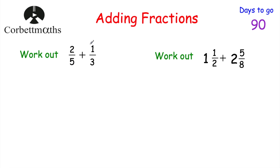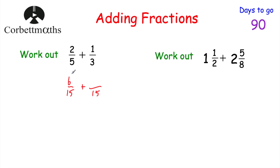So we've got: work out two fifths plus one third. When we're adding fractions with different denominators, it's very important to get equivalent fractions with the same denominator. Because the denominators are five and three, we're going to find the lowest common multiple of five and three, which is 15. You could use any common multiple — you could use 30 and so on — but I'm going to use 15. So I'm going to find two equivalent fractions with 15 on the denominator. To get from five to 15, we multiply by three.